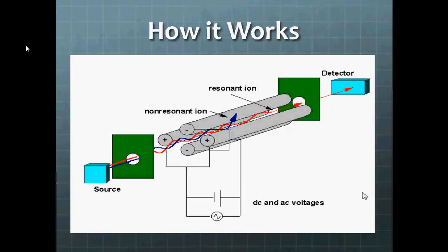And then the resonant ions will go through the quadrupole, go out the exit slit. If it's the first quadrupole, they'll go into the collision cell, and if it's the third quadrupole, they'll go on to the detector.